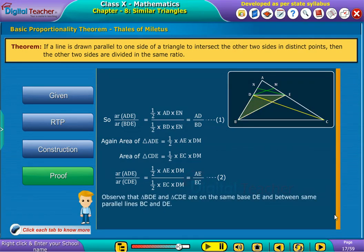Since triangle BDE and CDE are on the same base DE and between same parallels BC and DE, thus area of triangle BDE is equal to area of triangle CDE, which is equation 3.